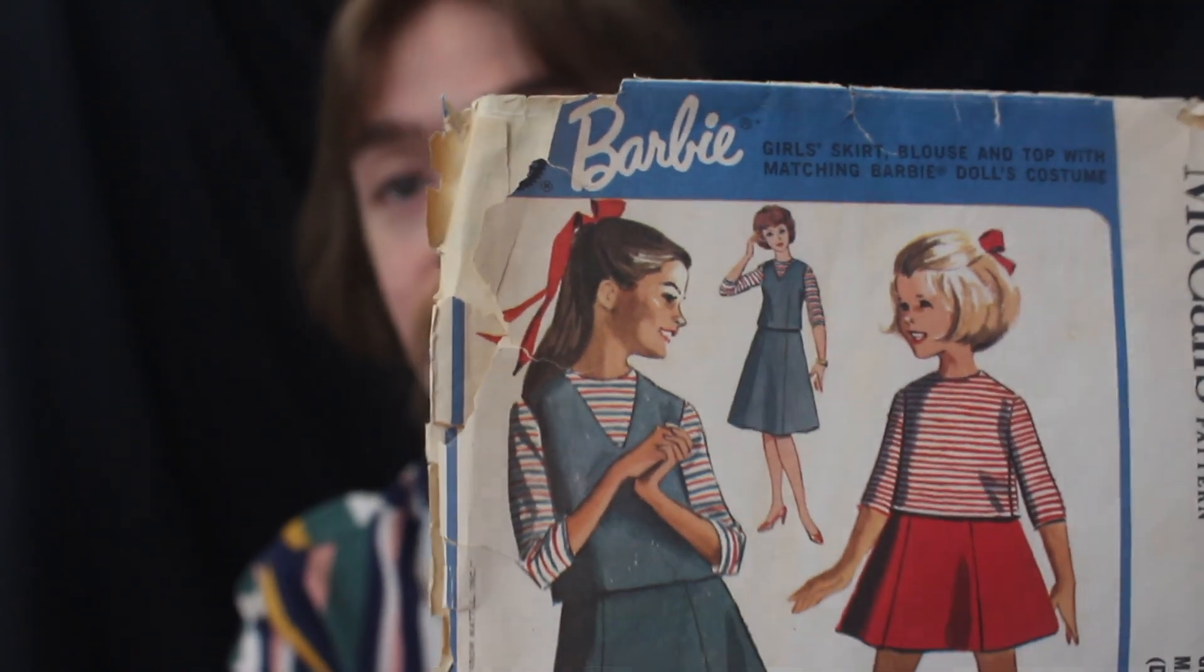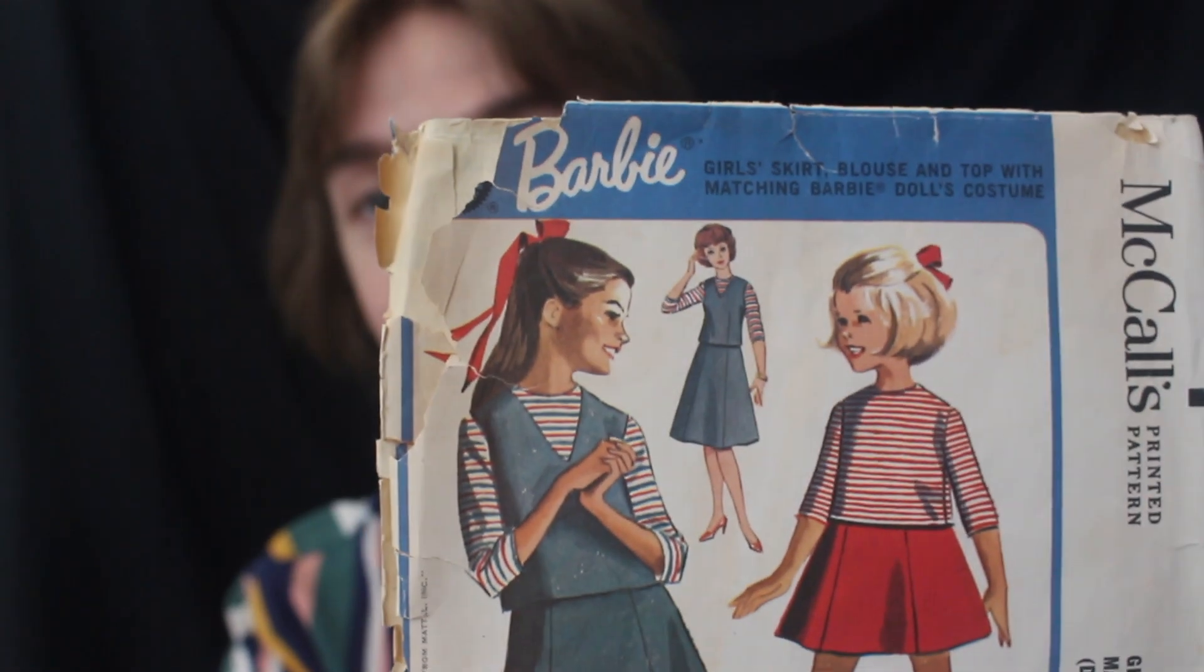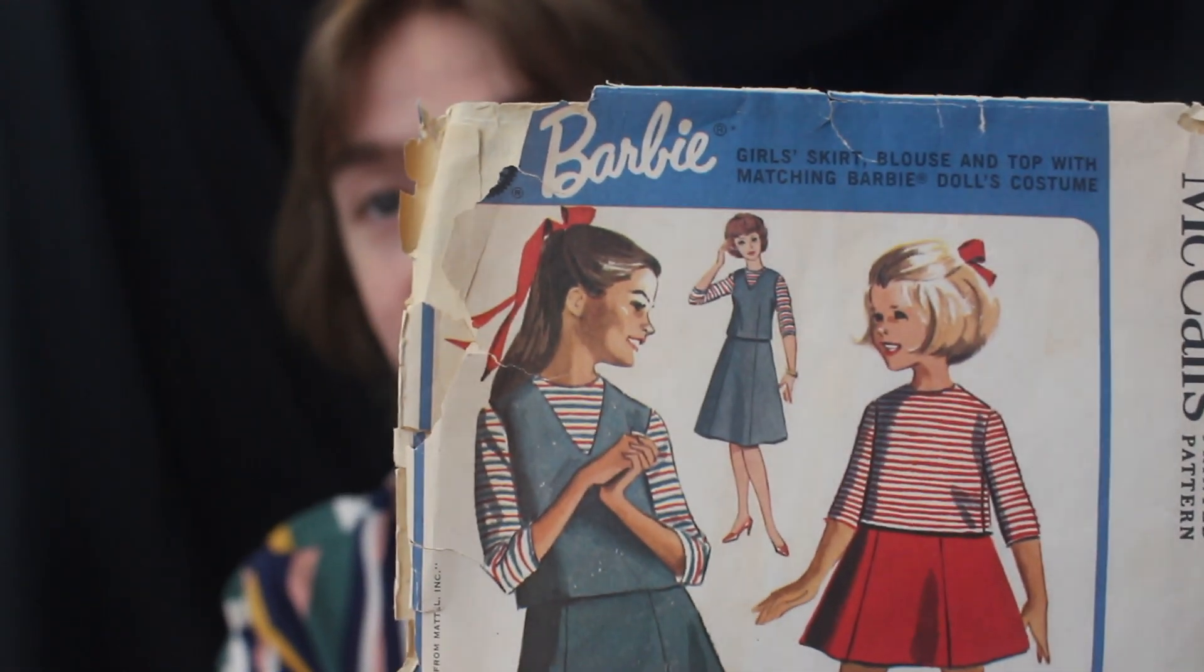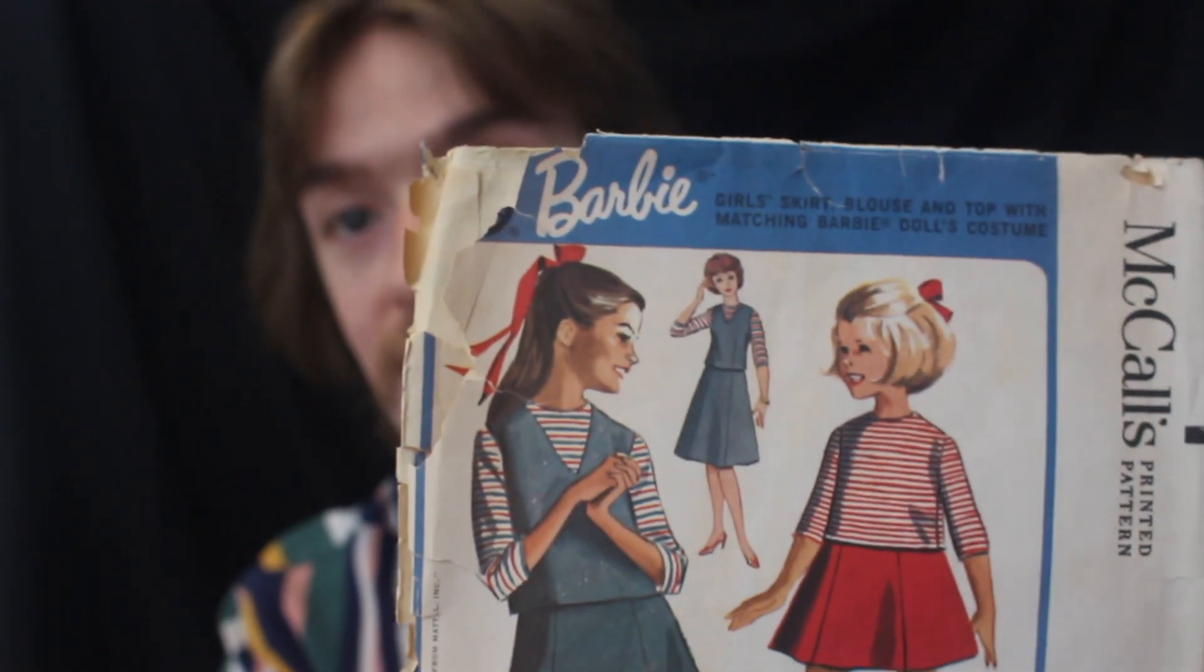We are going to be sewing a Barbie fashion. This is using an official Barbie pattern by McCall's. It is a pattern for girls as well as a Barbie fashion. So this fashion is copyrighted 1963 and it is very reminiscent of a foreign exclusive fashion released in 1967 called Sobonne. It is this vest and skirt fashion with a sweater. So I believe they took the idea for Sobonne from this pattern here.